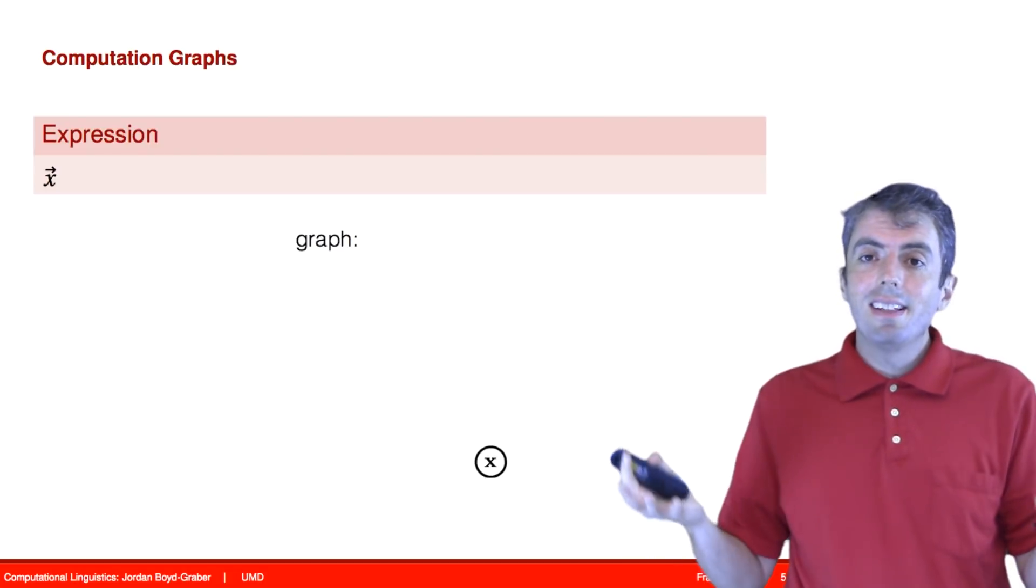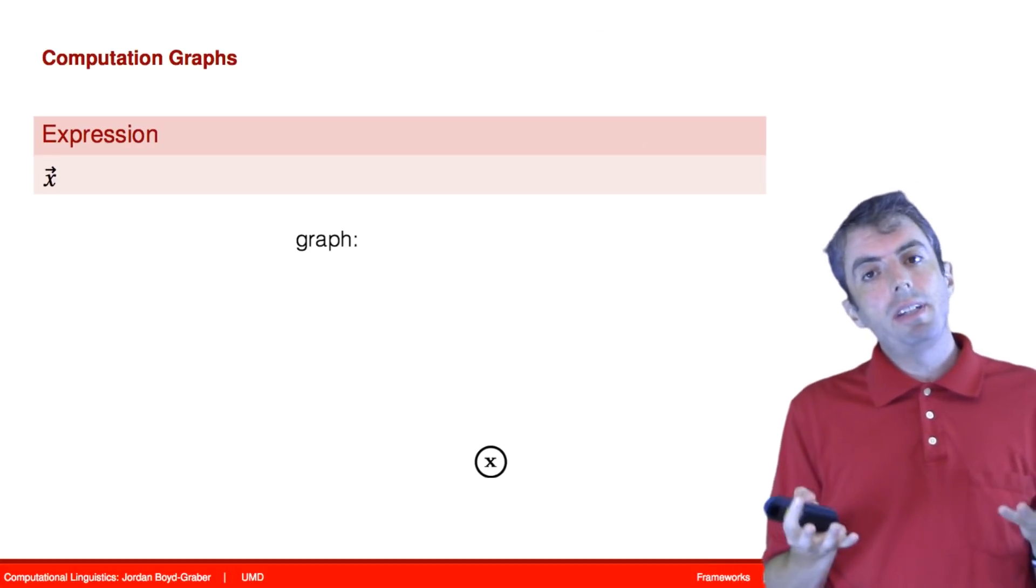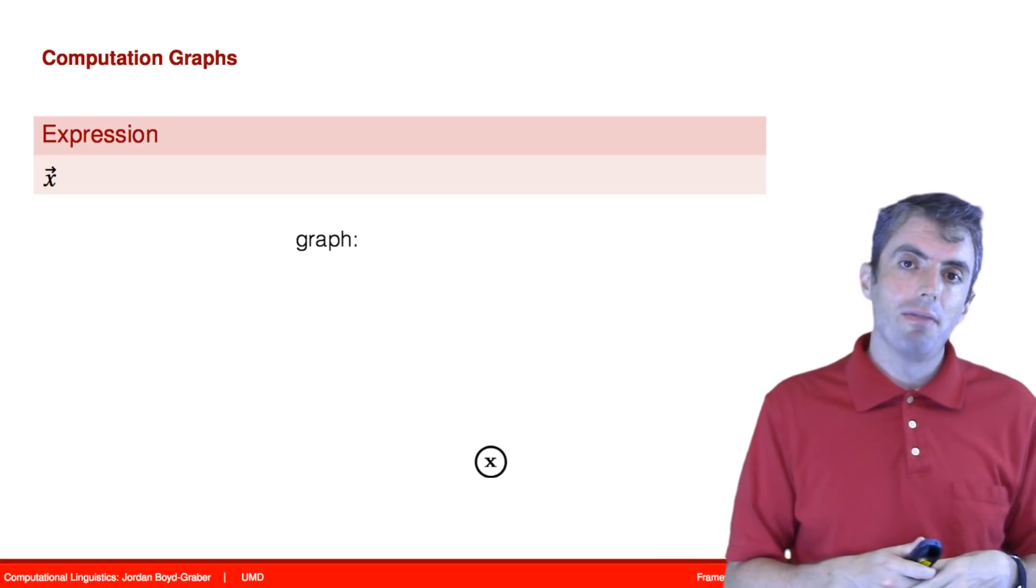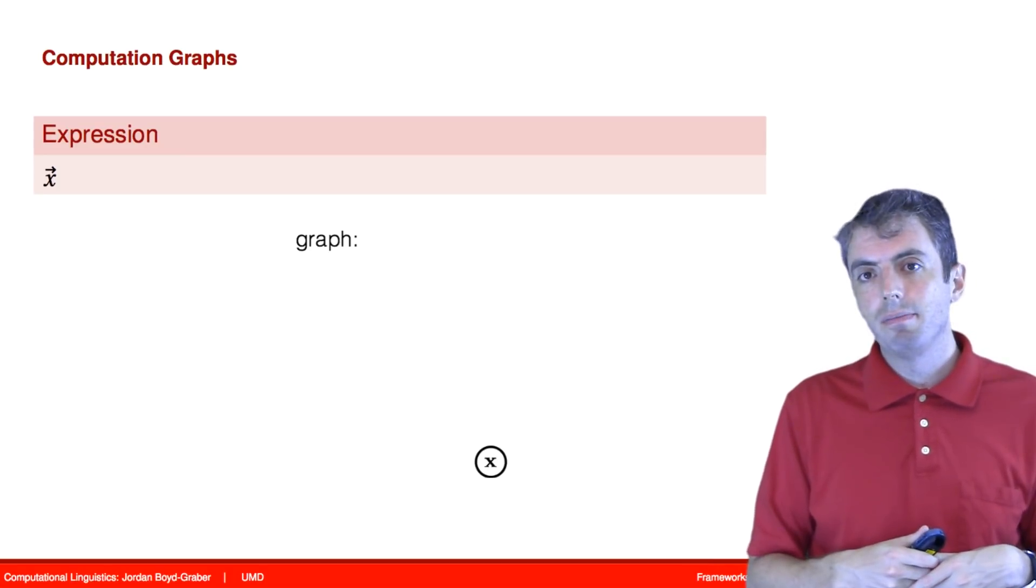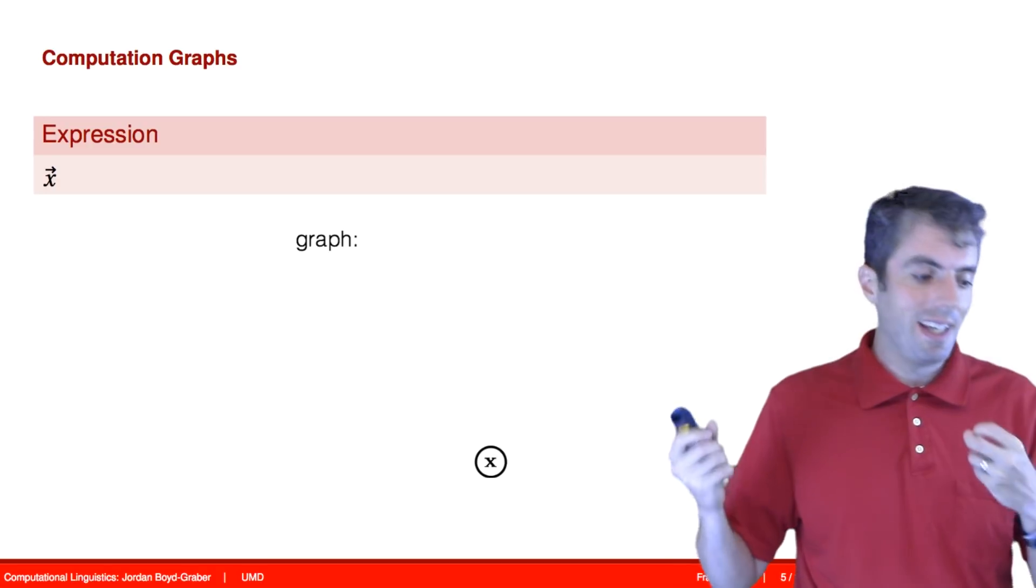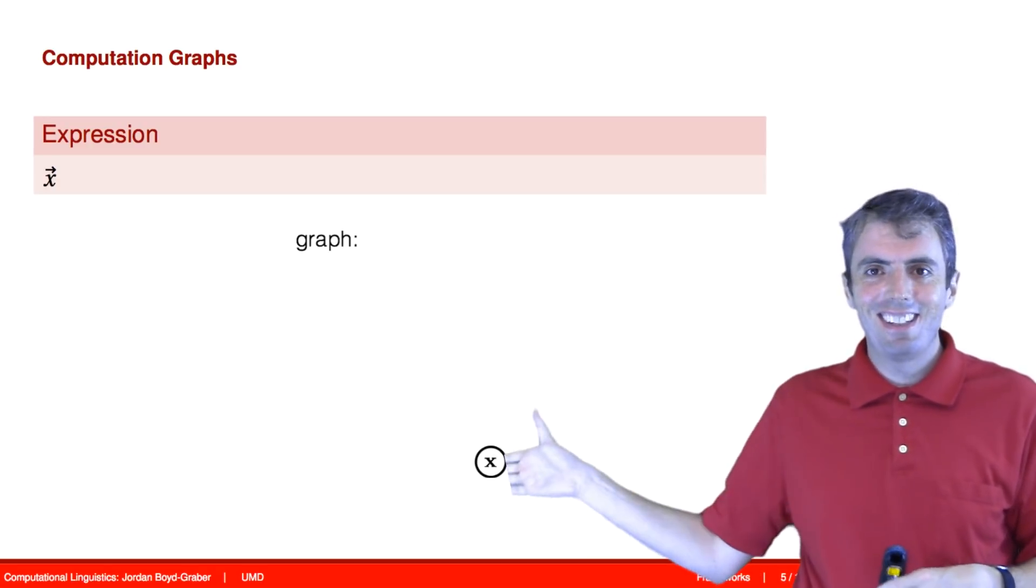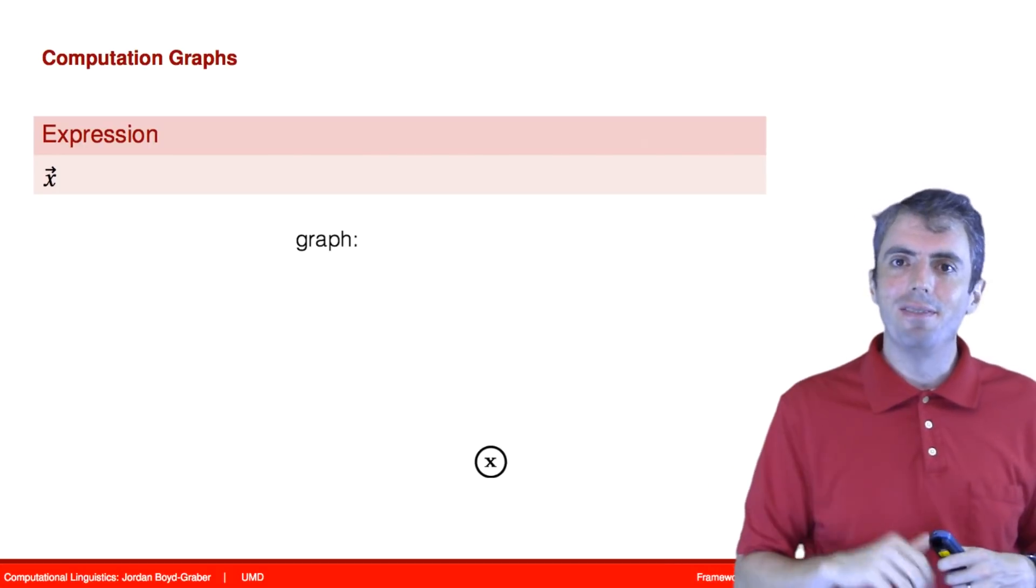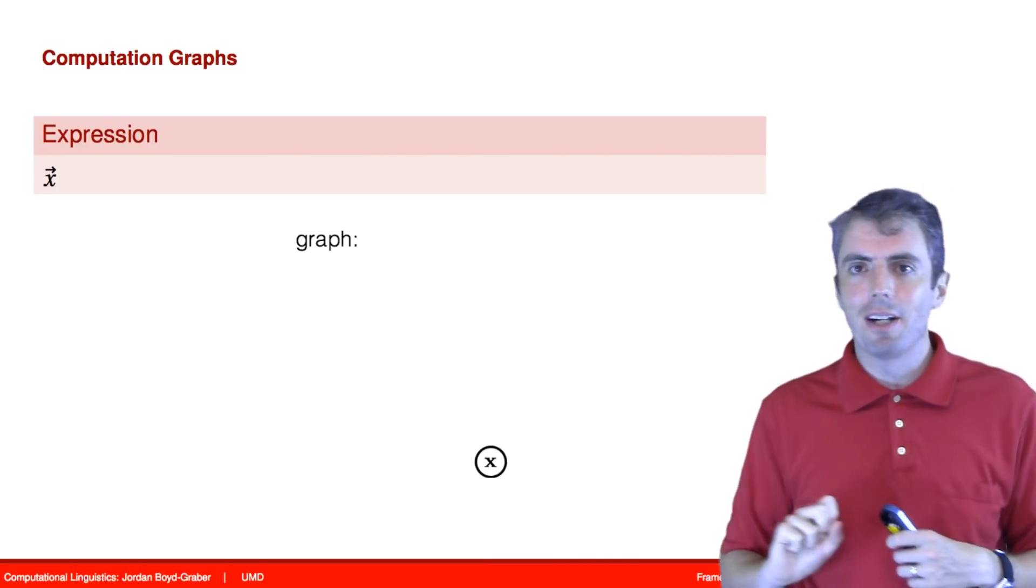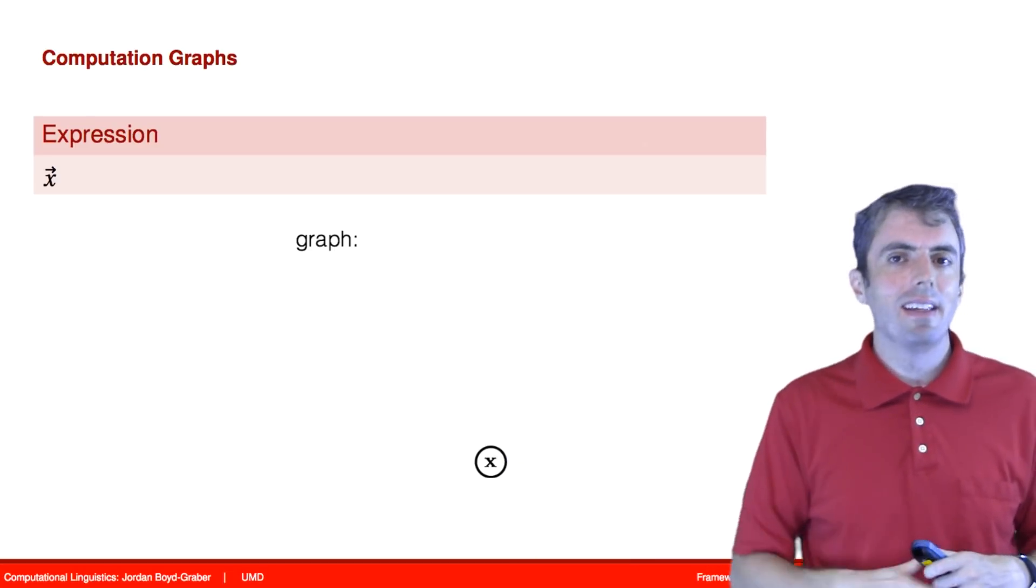So let's see what computation graphs are. So a computation graph is built out of variables. So let's say that we have some vector x. That is itself a computation graph, but a very trivial one. It's just sitting off by itself. You have a node that represents a piece of data, some expression. And it is very easy to evaluate. The vector x is the vector x.